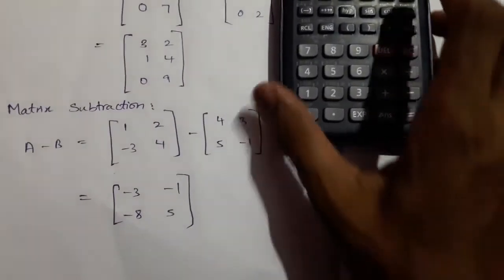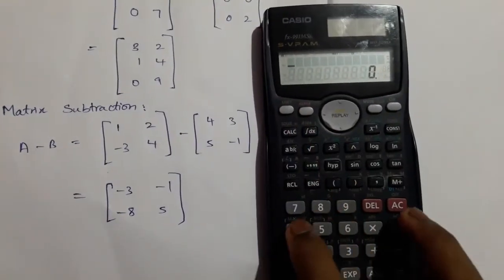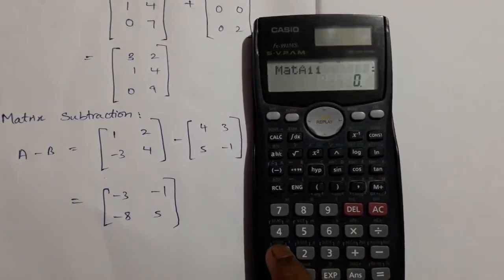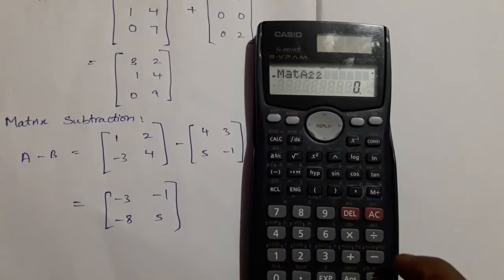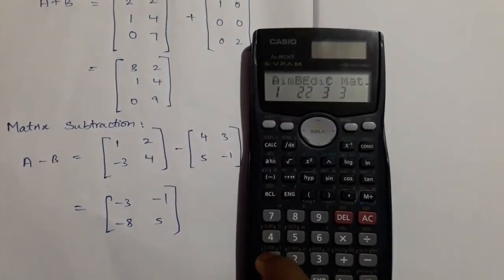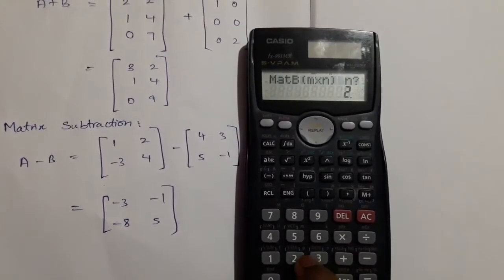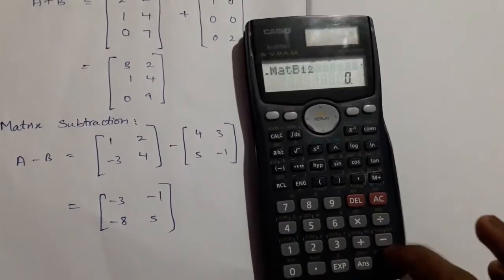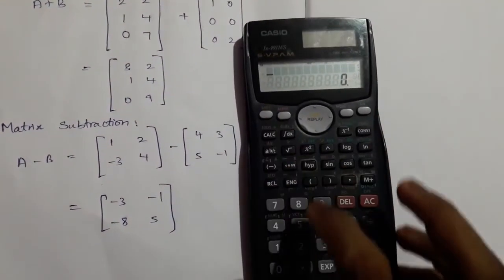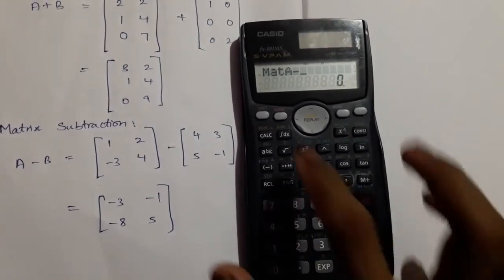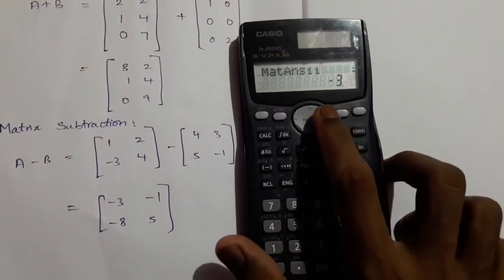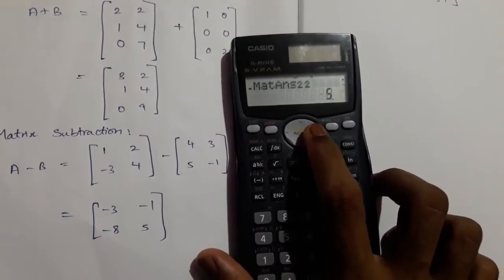Then we switch to matrix subtraction. Press Shift, 4, dimensions, 1 — set matrix A as a 2 by 2 matrix with elements 1, 2, 3, 4. Then press On, Shift, 4, dimensions, matrix B — 2 by 2 — with elements 4, 3, 5, minus 1. Press On, then Shift, 4, select matrix A, minus, Shift, 4, select matrix B, and press equals. The results are: minus 3, minus 1, minus 8, and 5.